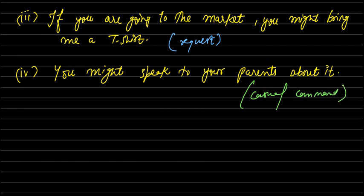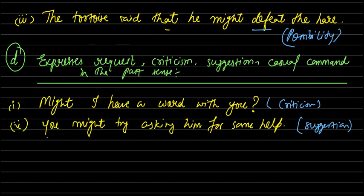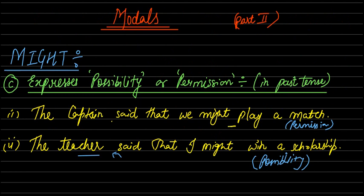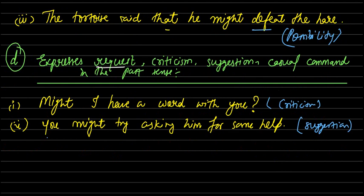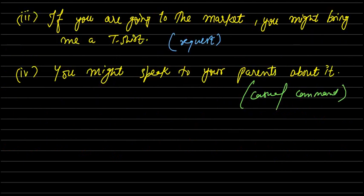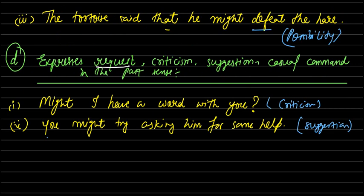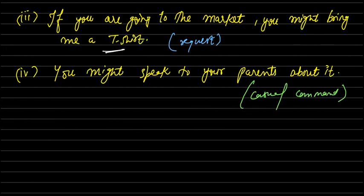Casual command is being given in this sentence. So what did we see? Might is used in different ways. First we saw how it expresses possibility and permission. We saw some sentences. After that we saw how it is used for request. This is here that if you are going to the market, then bring me a t-shirt. For criticism this is here. Similarly then what was it? Suggestion. For suggestion, it's happening that you can try asking him for help.